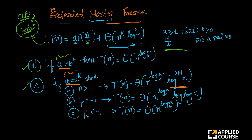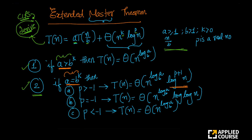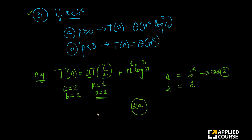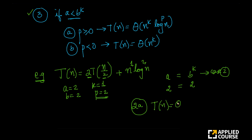First, get your variables right. You have to compare a and b^k. A is 2 and b^k is also 2, so a equals b^k, which means we go to Case 2. In Case 2a, T(n) is theta of n^(log_b(a)) · log^(p+1)(n). Since a equals 2 and base b equals 2, log_2(2) equals 1, so the n exponent is 1.